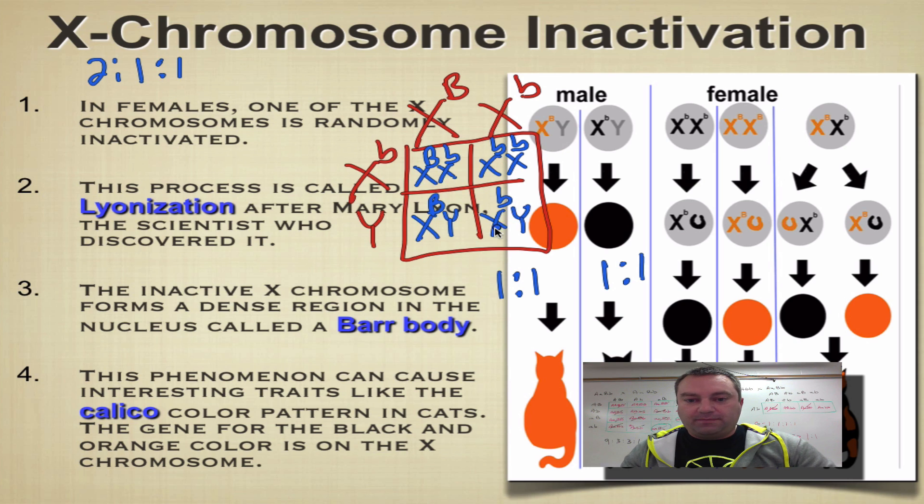To one calico. There's your two black cats, there's your orange cat, and there's your calico cat. So that's how you would do a Punnett square problem that involves this X chromosome inactivation.